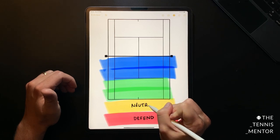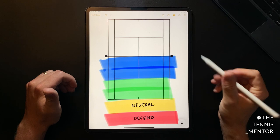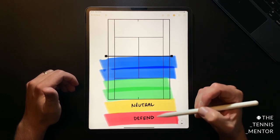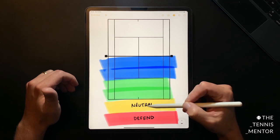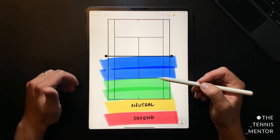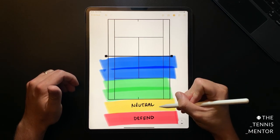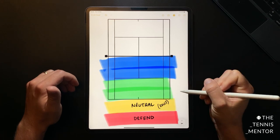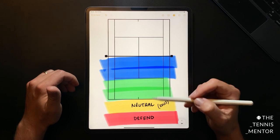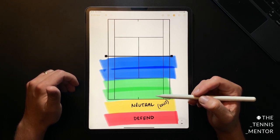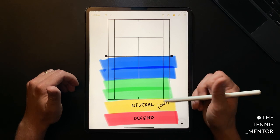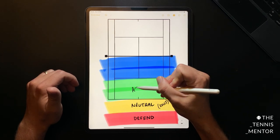When you are in this zone just behind the baseline you don't have the opportunity to attack but you shouldn't be defending either because you're in a good position to apply some pressure to your opponent. Another way we could describe this zone is as the rally zone. Your job is to keep the ball in play to a good length keeping your opponent back, giving yourself another opportunity to step even closer into the attack zone.